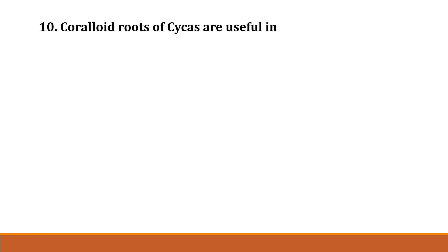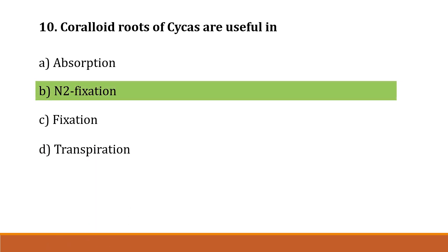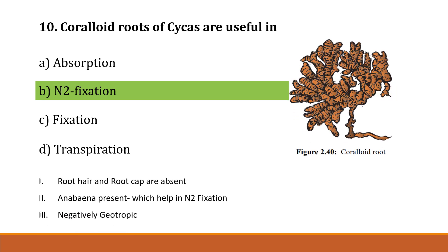Question number 10: Coraloid roots of Cycas are useful in Option A: absorption, Option B: nitrogen fixation, Option C: fixation, Option D: transfusion. The correct answer is Option B, nitrogen fixation. In Cycas, two types of roots are present — one is tap root system and another is coraloid root. Coraloid roots help in nitrogen fixation. Root hair and root caps are absent in coraloid roots. These coraloid roots are negatively geotropic, meaning they grow against gravitational force.